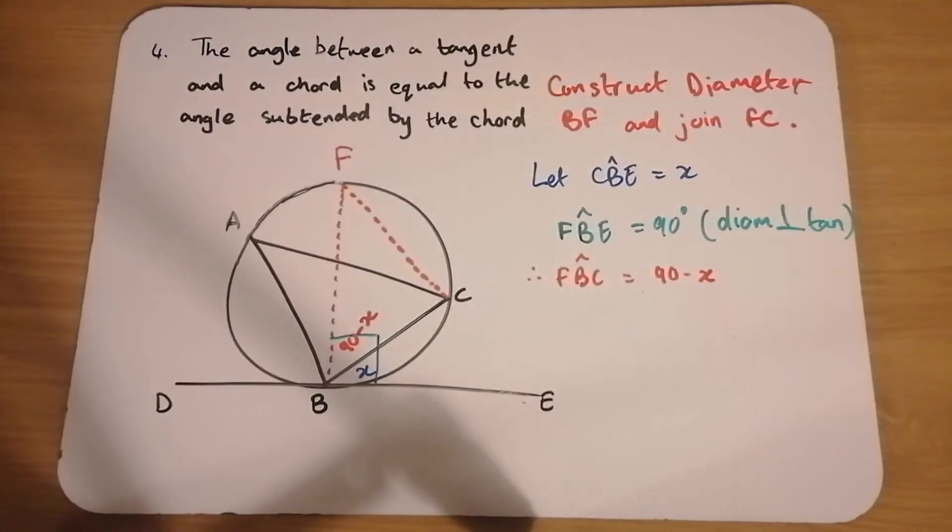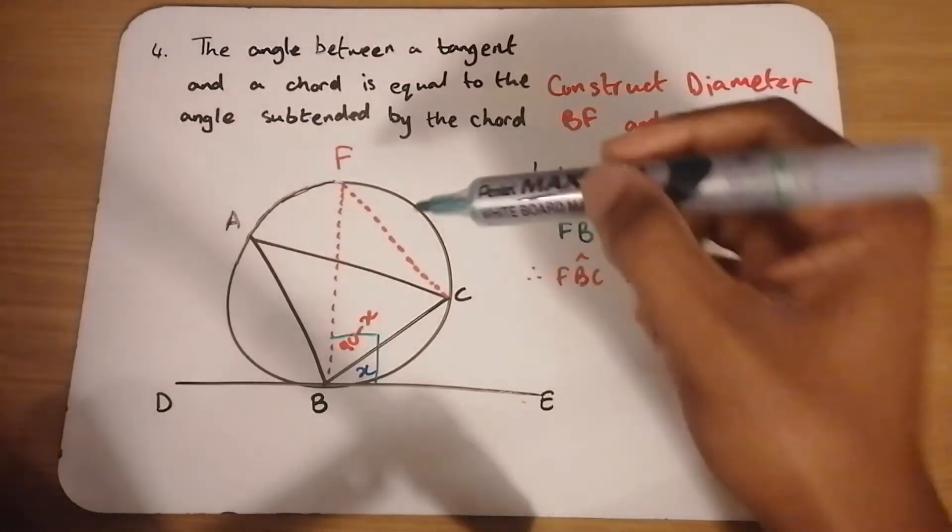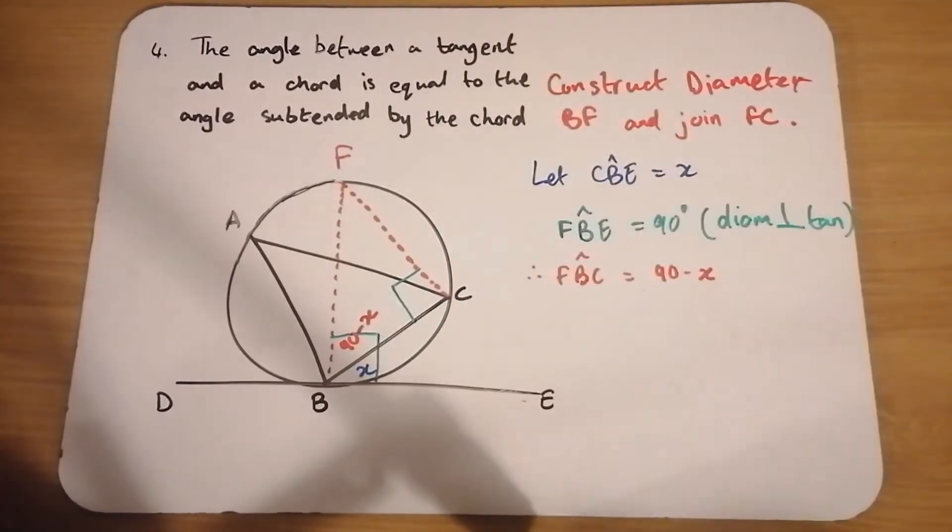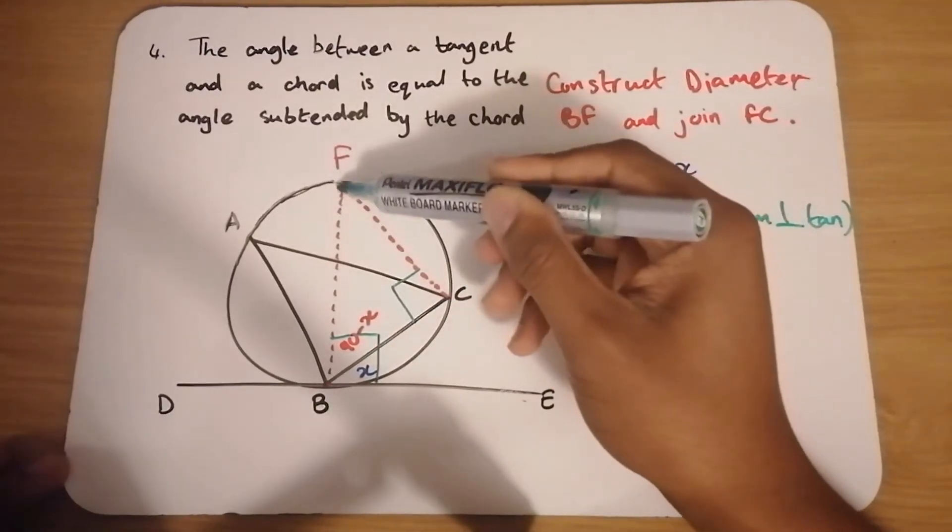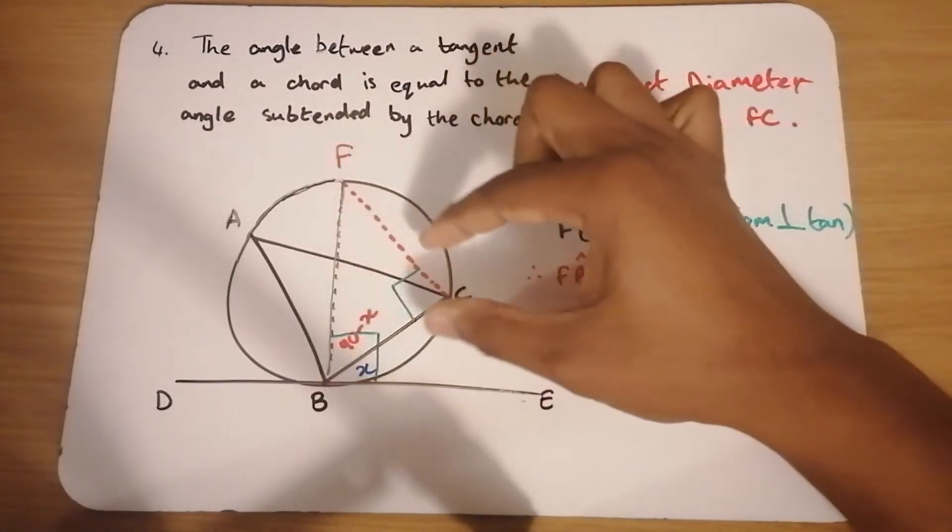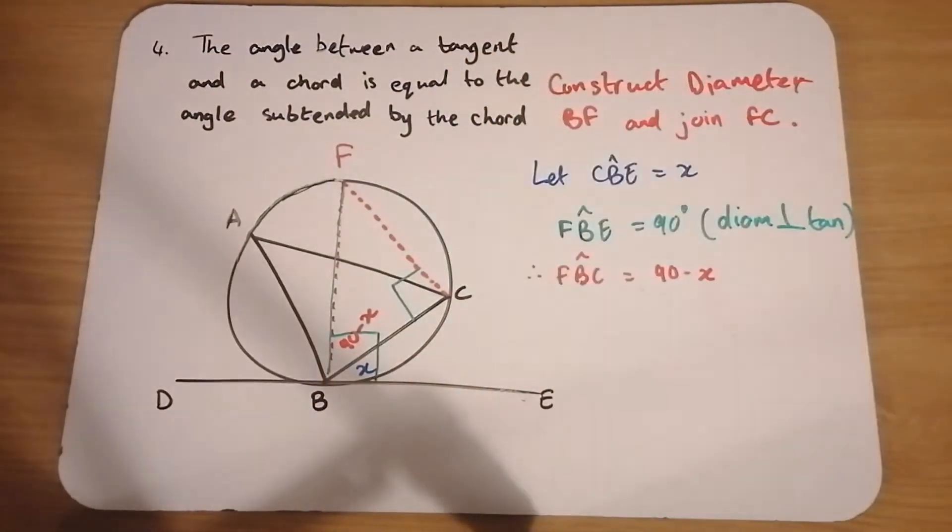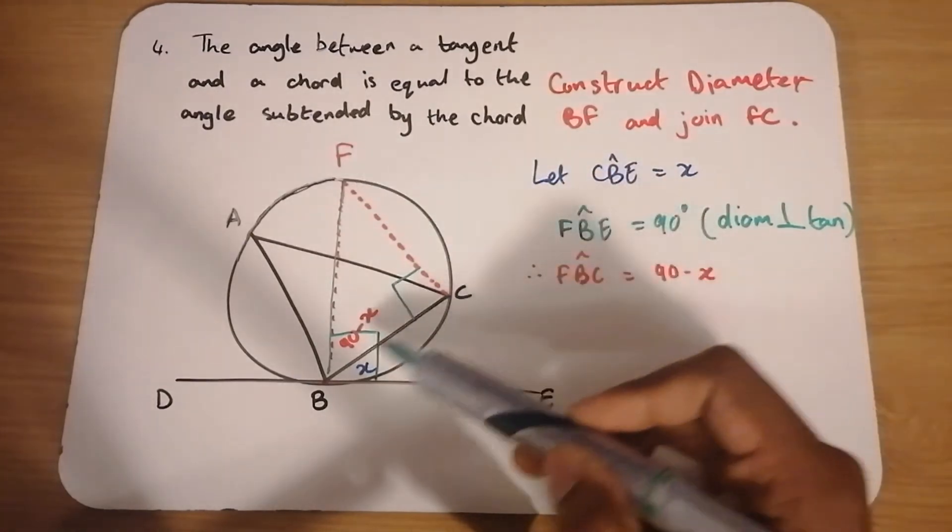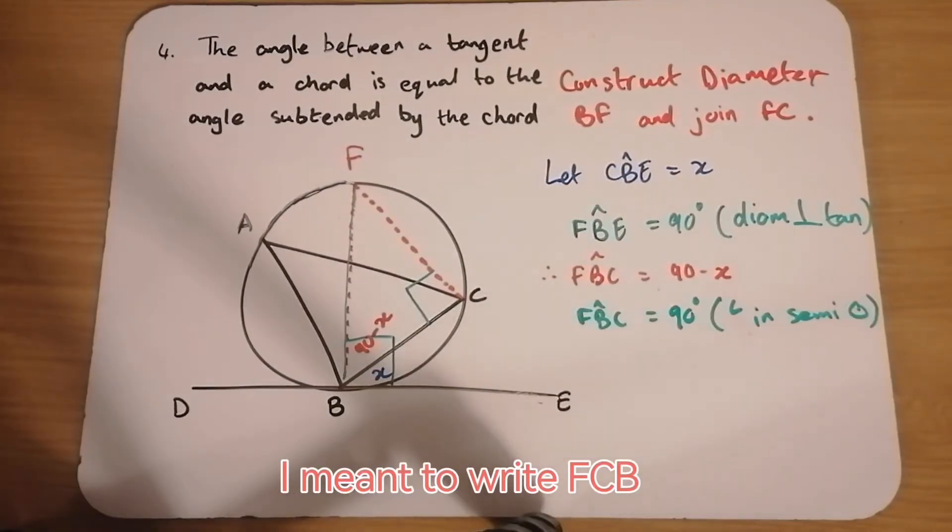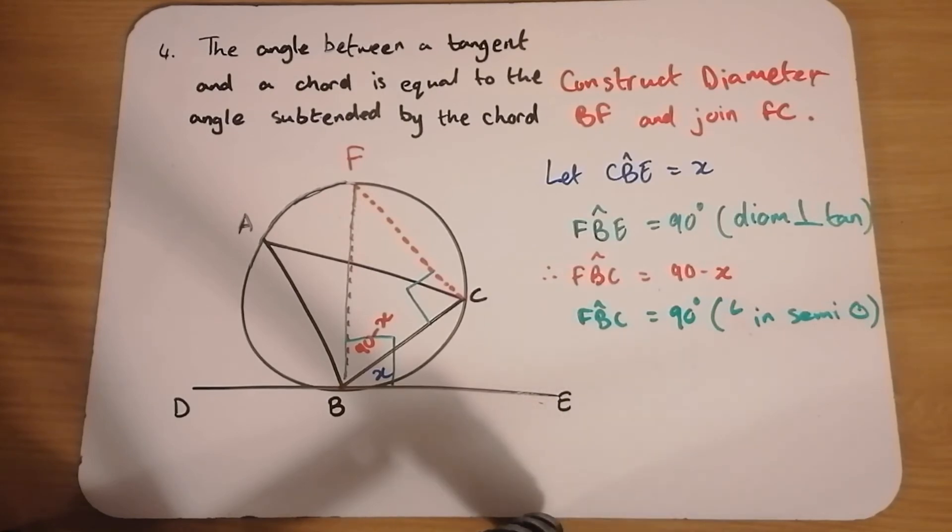The second thing to note about this diameter is that it subtends a 90 degree angle at the circumference. So the diameter BF subtends a 90 degree angle at point C. Okay, so this whole angle FCB is 90 degrees. And we usually refer to this theorem as angle in a semicircle.